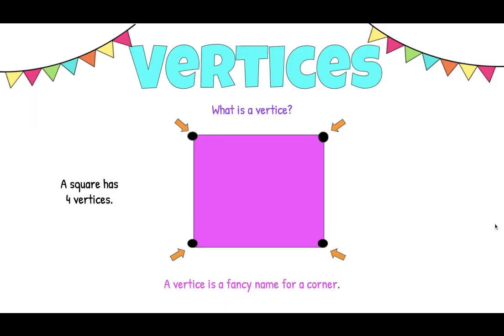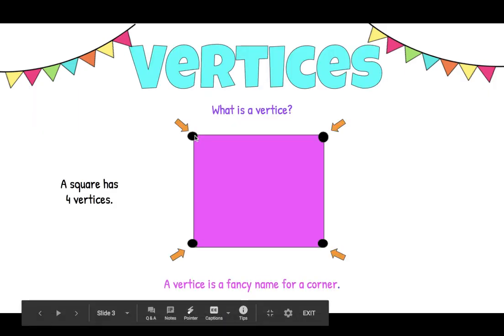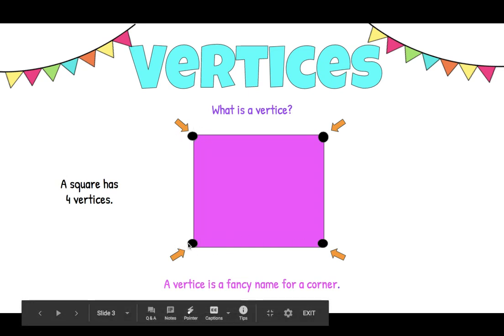Now when we're learning about these vertices, vertices are just a fancy word for corners. You have two straight lines and when they meet they make a point, they come to a corner.